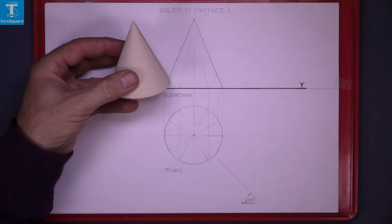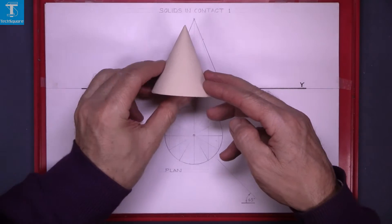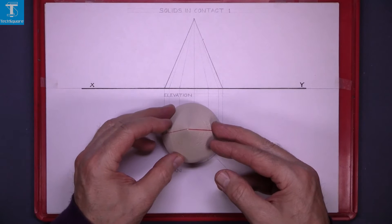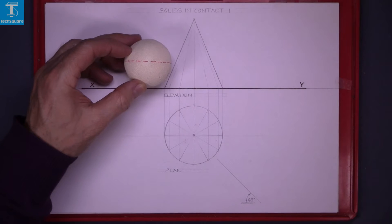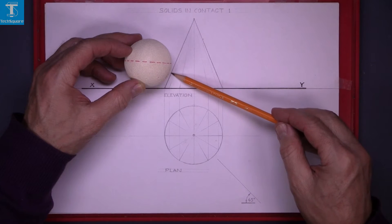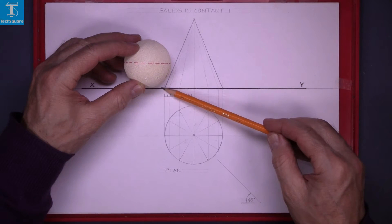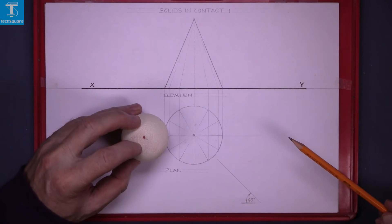This is the cone - in front it's a triangle and the plan is a circle. This is where we want to locate the sphere in contact with the cone here and in contact with the horizontal plane. And then the plan will look like this.